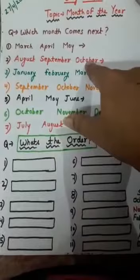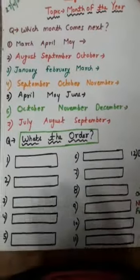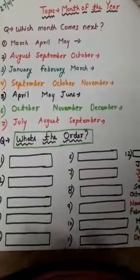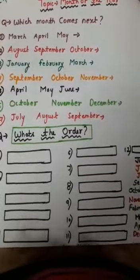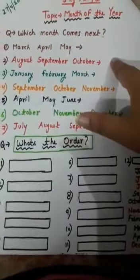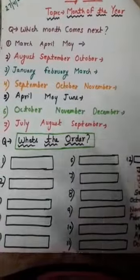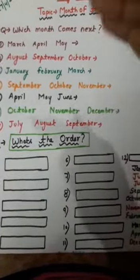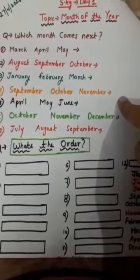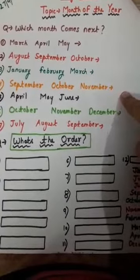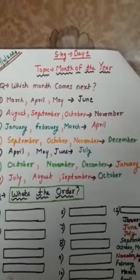Then July, August, September, October, November, December. You repeat the sequence from January all the way through to practice. So let's start doing question number one.